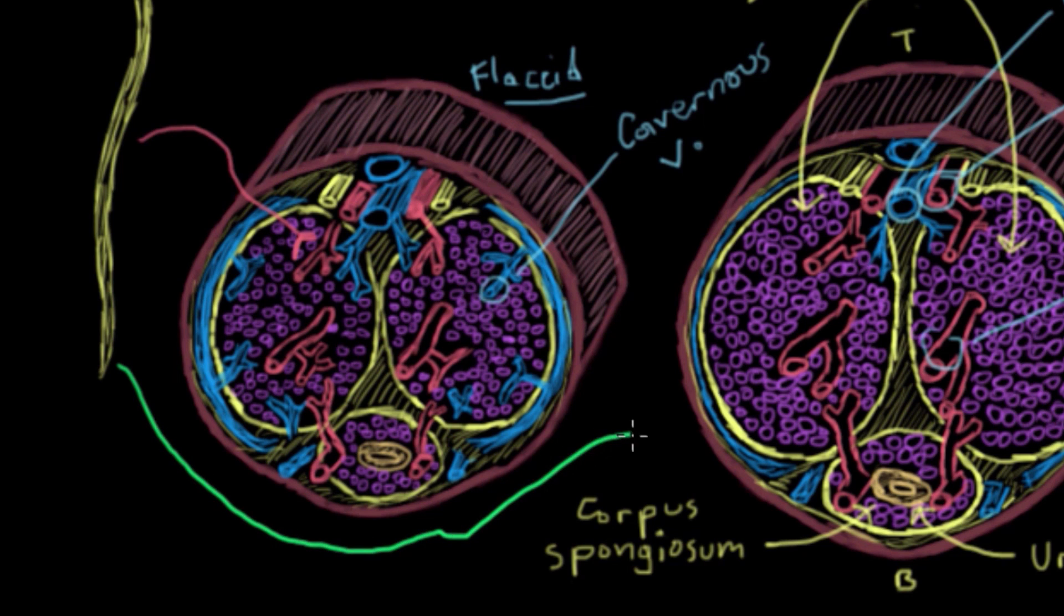But over on the other side, on the erect side, there's another neuron, actually a different type of neuron, that actually sends a different signal to the arterioles and results in them opening up and allowing blood into the penis.